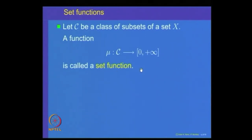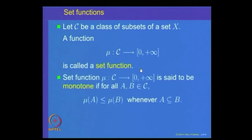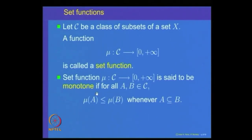Next, we will be looking at some special properties. Let us define a set function mu, where C is a collection of subsets of a set X and [0, +∞) denotes the non-negative extended real numbers. A set function mu is said to be monotone if for any two sets A and B in C, mu(A) ≤ mu(B) whenever A is a subset of B. This is called the monotone property.